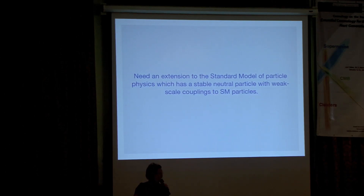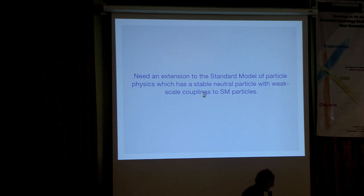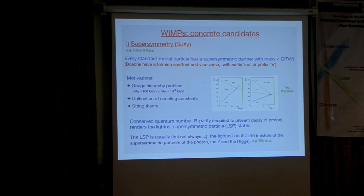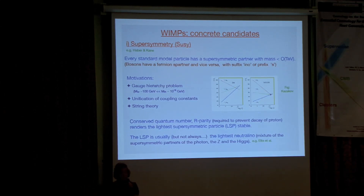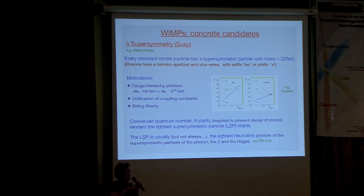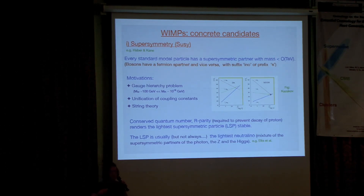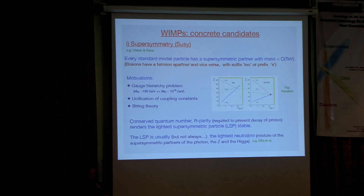What we need is an extension to the standard model of particle physics which has a stable neutral particle with weak-scale couplings to the standard model particles. Fortunately, we do have several possibilities, the most popular of which is supersymmetry. I should emphasise that having a viable dark matter candidate is now often used as motivation for building new models, but that wasn't the reason for inventing supersymmetry — there are deeper reasons for it. Very simply, in supersymmetry every standard model particle has a supersymmetric partner: bosons have fermionic partners and vice versa, named with the suffix '-ino' or prefix 's-', giving squarks, fermions, and gauge '-inos'. One of the biggest motivations is what's called the gauge hierarchy problem — understanding why the weak scale is so much smaller than the Planck scale. In particular, the mass of the Higgs particle would receive radiative corrections pushing it up towards the Planck scale.